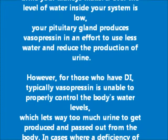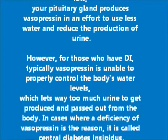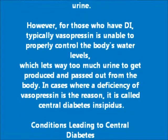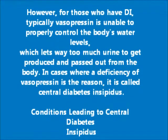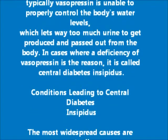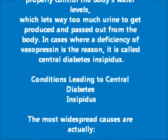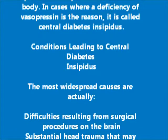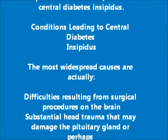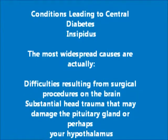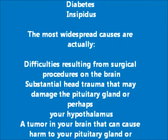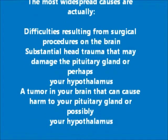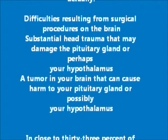However, for those who have diabetes insipidus, vasopressin is unable to properly control the body's water levels, which lets too much urine to get produced and passed out from the body. In cases where a deficiency of vasopressin is the reason, it is called central diabetes insipidus. The most widespread causes are difficulties resulting from surgical procedures on the brain, substantial head trauma that may damage the pituitary gland or your hypothalamus, or a tumor in your brain.